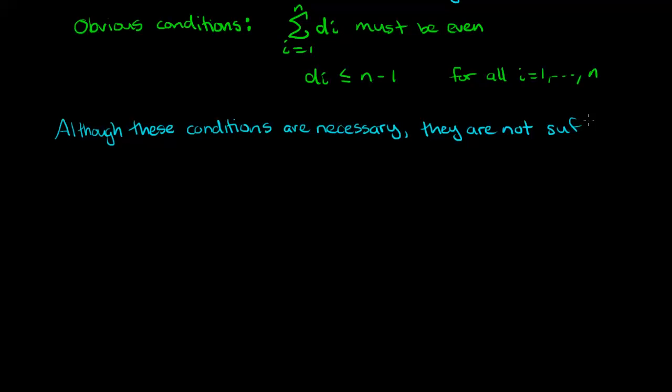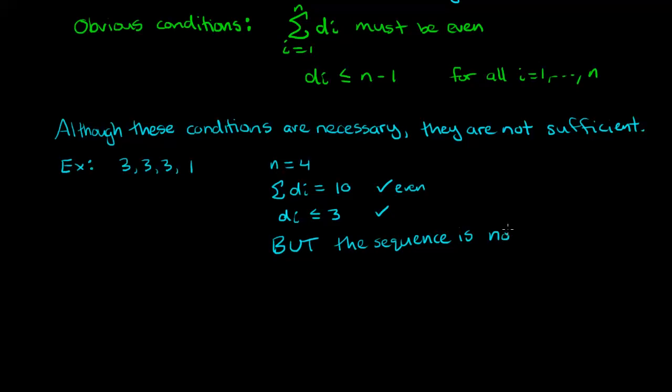Although these conditions are necessary they are not sufficient. Let's take a look at an example. If we take the sequence 3, 3, 3, 1 we can see that there are four numbers in the sequence so n equals 4. Also if you take the sum of the numbers in the sequence you get 10 and that is even. Also each number is less than or equal to 3 which is n minus 1. So the sequence satisfies the necessary conditions the ones that we wrote up top in green but the sequence is not graphical. We can see that it's not graphical by trying to build it and we'll see that we run into a problem right away.